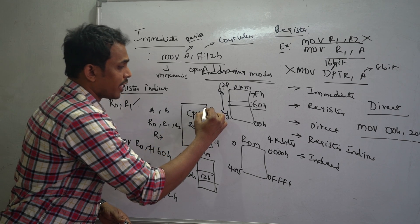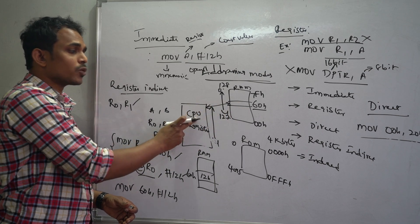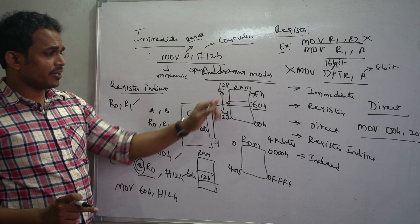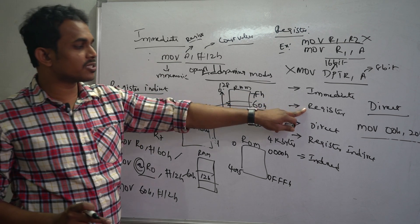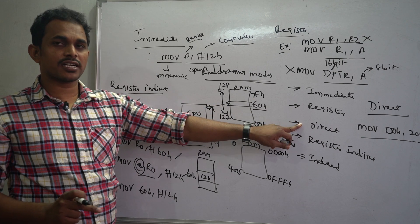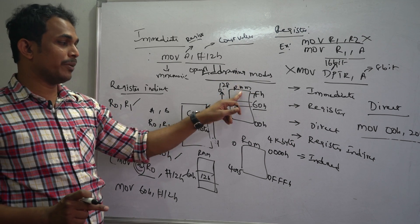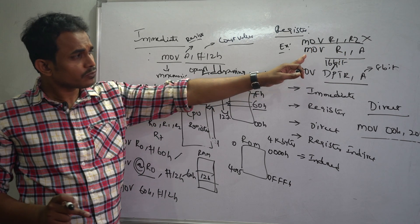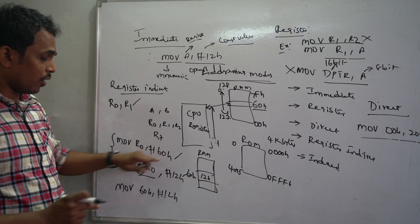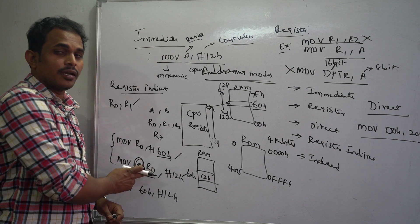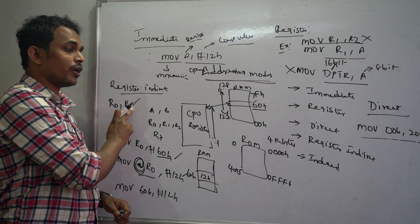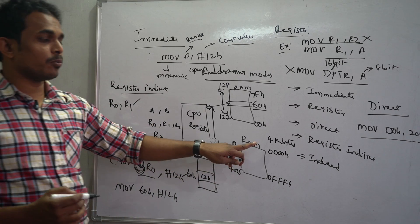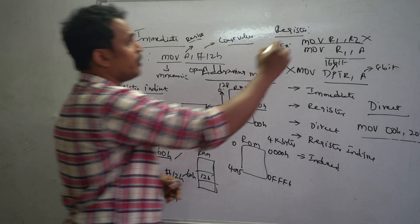In register indirect addressing mode, you access memory locations through registers. RAM memory supports both read and write operations. Immediate mode stores a constant to a register; register mode shares data between registers; direct mode operates between RAM locations; register indirect accesses RAM via pointer registers R0 and R1. The final mode, indexed addressing mode, is used to read data from ROM memory.